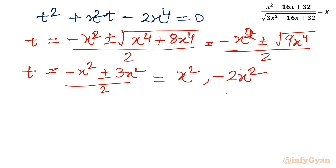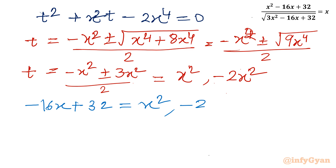Since t was our substitution equal to -16x + 32, we now get two cases: t = x² gives -16x + 32 = x², and t = -2x² gives -16x + 32 = -2x². We will frame two quadratic equations. From the first: x² + 16x - 32 = 0.